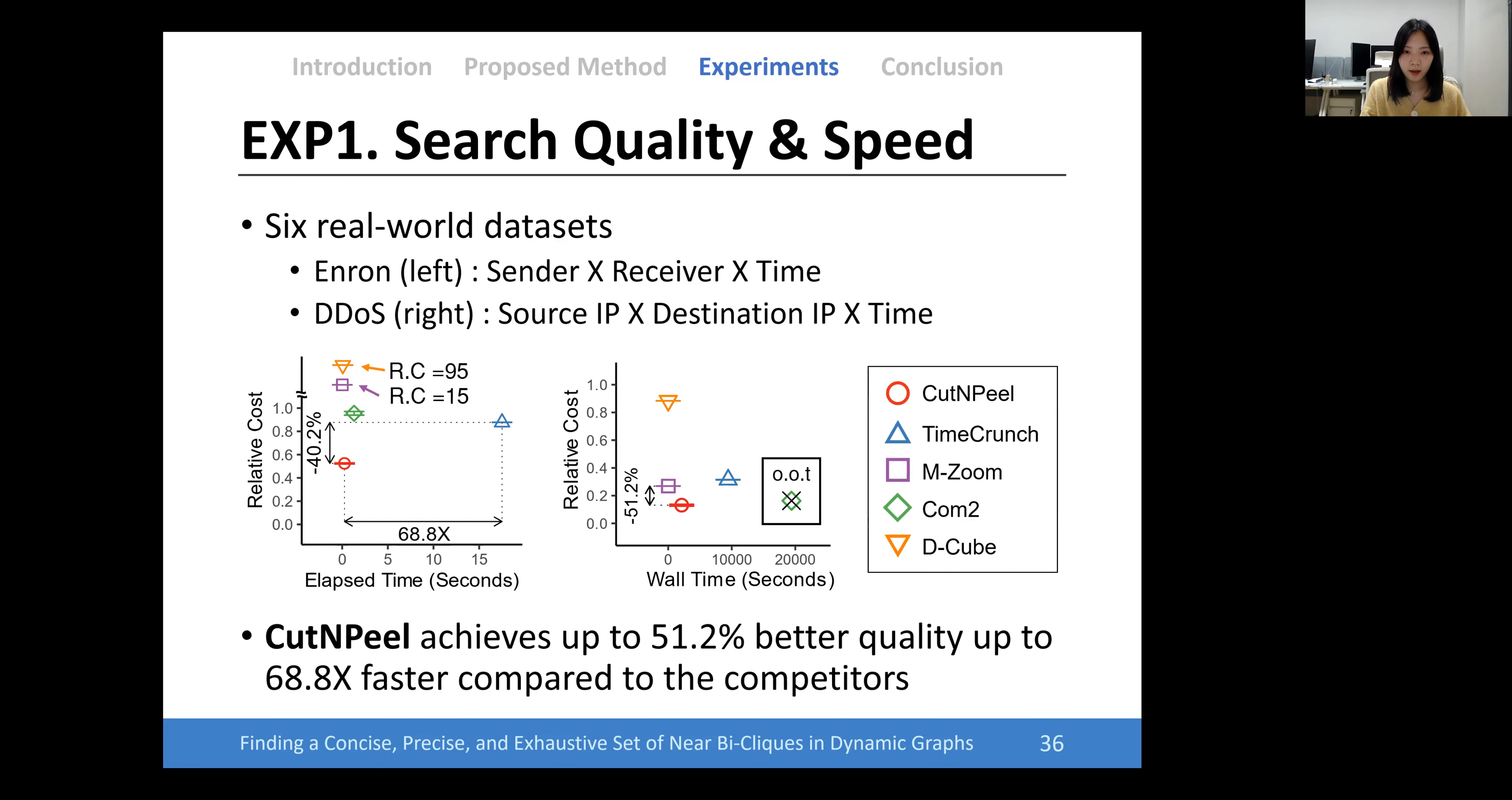As a result, Cut and Peel achieved the best relative cost and speed in all datasets. It has up to 51.2% better quality and up to 68.8 times faster compared to their competitors.